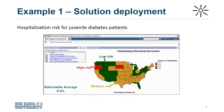This map is an example of a solution deployed through a Cognos application. In this case, the case study was hospitalization risk for patients with juvenile diabetes. Like the congestive heart failure use case, this one used decision tree classification to create a risk model that would serve as the foundation for this application. The map gives an overview of hospitalization risk nationwide, with an interactive analysis of predicted risk by a variety of patient conditions and other characteristics.